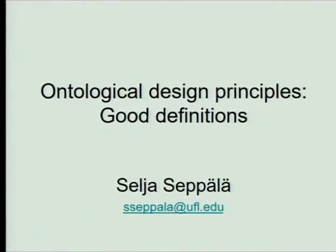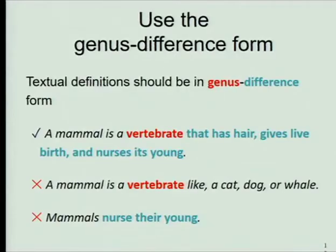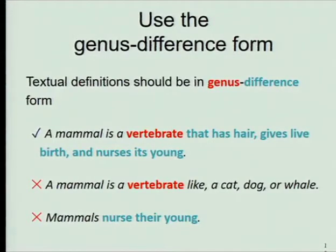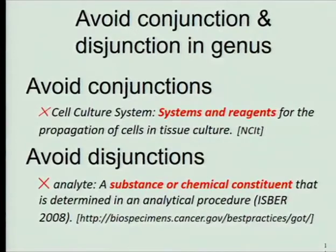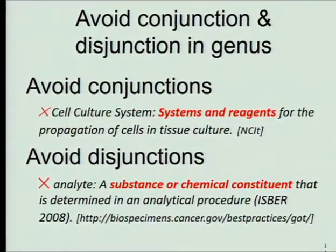I'm going to repeat some design principles put forward by a colleague here in Buffalo who has been working on this topic quite single-mindedly. These are examples of good and bad definitions. A good definition gives you a set of necessary and sufficient conditions for being a mammal. A bad one gives you a list of things which are mammals. Another bad one gives you a necessary condition but not sufficient conditions. Avoid conjunctions — in SNOMED, they liked conjunctive genera, so 'a cell culture system is a systems and reagents,' and that's just not English. Or they had disjunctions: 'an analyte is a substance or chemical constituent,' without defining what those terms mean.